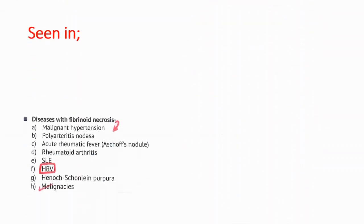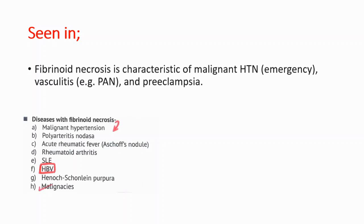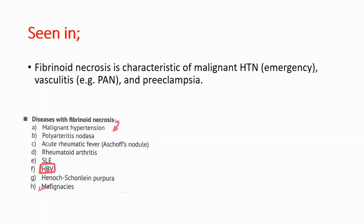This is important. You can see all the diseases associated with fibrinoid necrosis, but the most important ones are malignant hypertension, which is an emergency; vasculitis, for example polyarteritis nodosa; and preeclampsia in pregnancy.